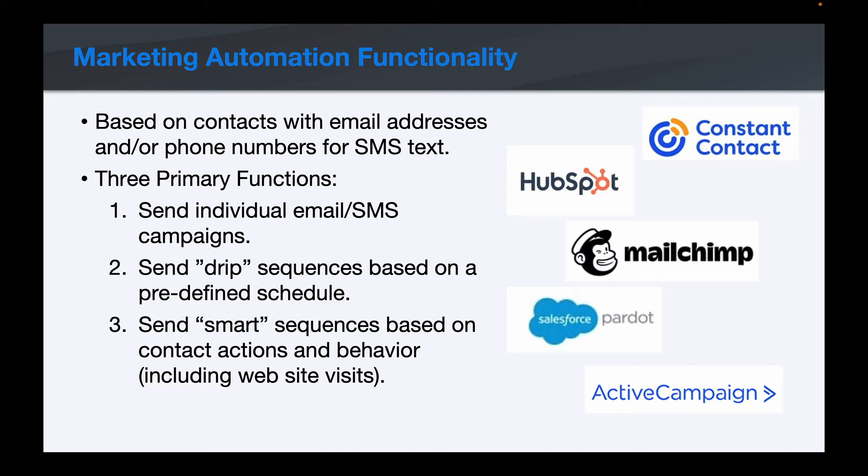Generally there are three primary functions with marketing automation. One is to send individual emails or SMS campaigns — one-off campaigns. The second is to set up drip campaigns or sequences where you send a series of emails over time, dripping them out to those contacts over a designated period of time. And then the third, which I think is the most interesting, is the ability to send smart sequences of emails or text messages based upon contact actions and behavior — so based on what a contact is doing, you can drive what emails or text messages are sent.